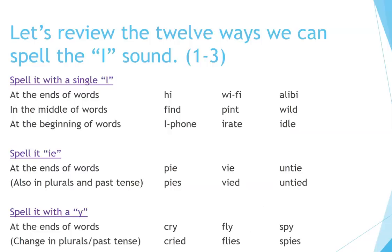Let's review the 12 ways we can spell the I sound. Spellings one to three. Spell it with a single I: at the ends of words — hi, Wi-Fi, alibi; in the middle of words — find, pint, wild; at the beginning of words — iPhone, irate, idle. Spell it I-E at the ends of words: pie, vie, untie. Also in plurals and past tense: pies, vied, untied.